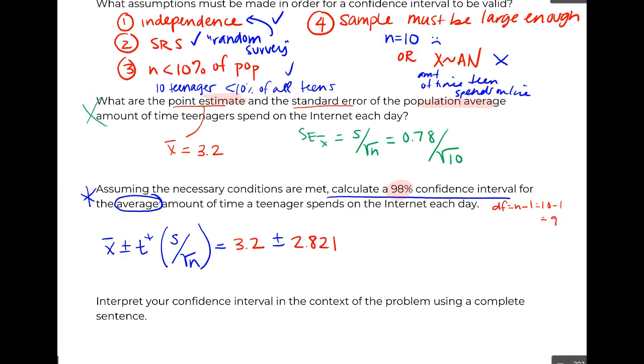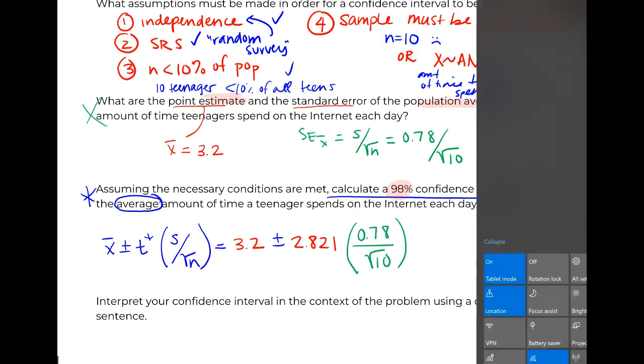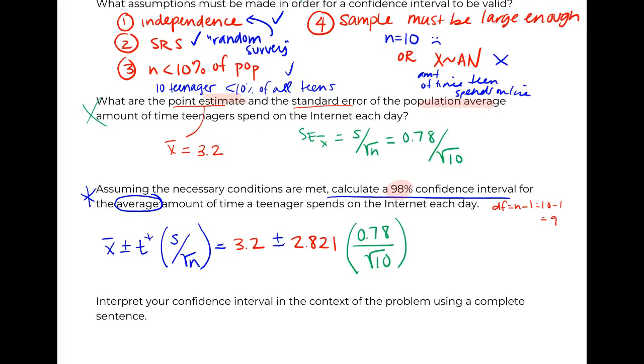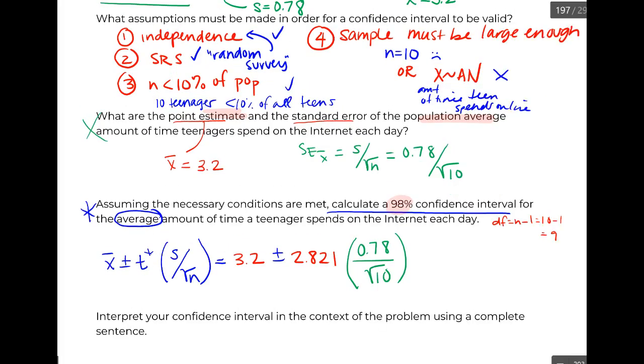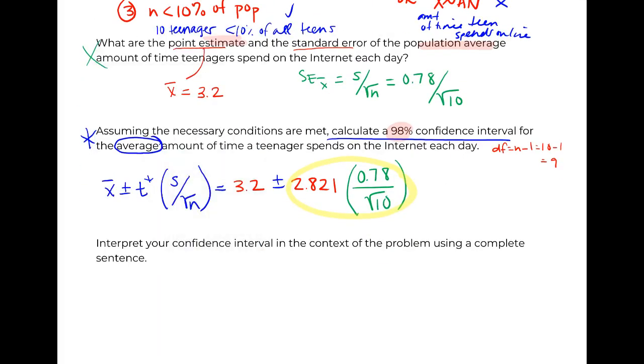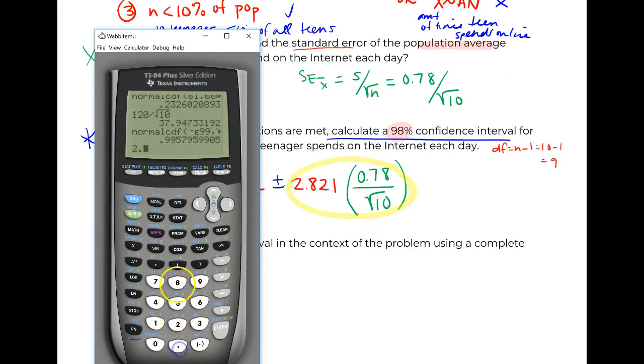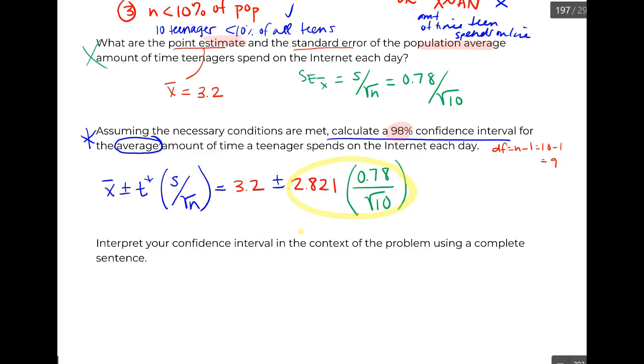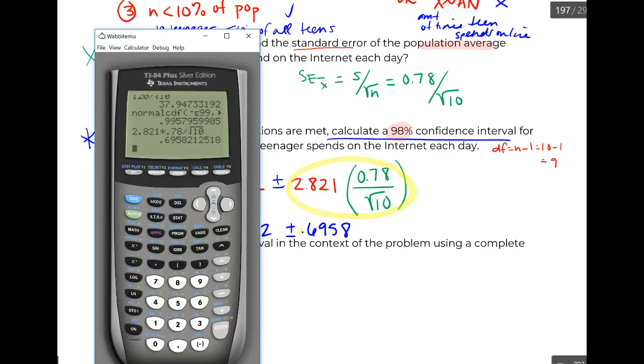2.821. And then our S divided by our square root of N. And if you're doing this by hand with a little calculator, just like before, I recommend calculating your margin of error first. So 2.821 times 0.78 divided by the square root of 10. 0.6958. We're going to add or subtract that to 3.2. So 3.2 minus that business and 3.2 plus that business.